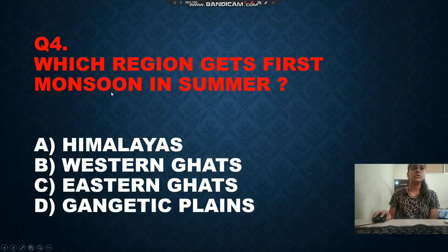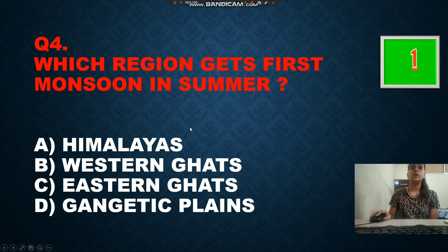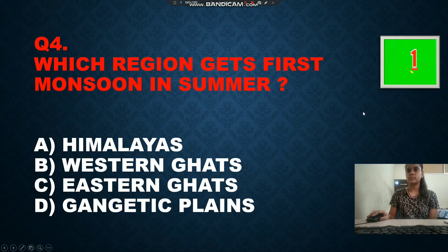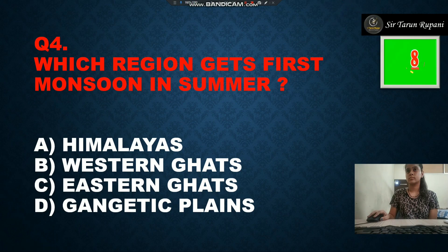Our next question: which region gets the first monsoon in summer? Option A is Malabar, option B is Western Ghats, option C is Eastern Ghats, and option D is Ganga Plains. Our correct answer is Western Ghats, option number B.